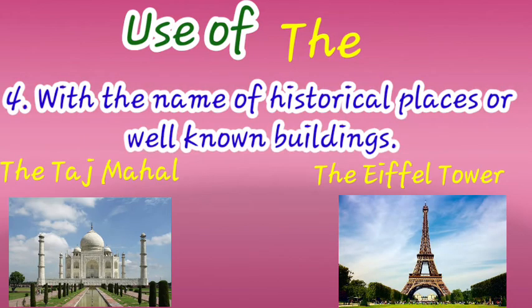The fourth use of 'the' is with the names of historical places or well-known buildings. For example: 'Here is the Taj Mahal' — Taj Mahal is a historical place. Another example: 'the Eiffel Tower.' Both are historical places and well-known buildings, so we use 'the' before them.